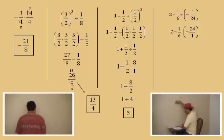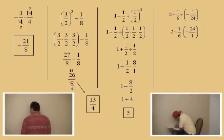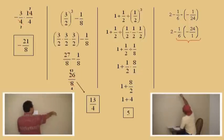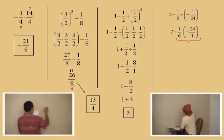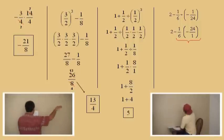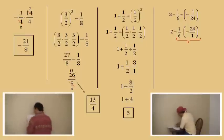We have to do that multiplication. We have 2 subtract the product of 1 sixth times negative 24 over 1. What is 1 sixth times negative 24 over 1? Just multiply straight across the top and straight across the bottom. Negative 24 over 6. Very good.